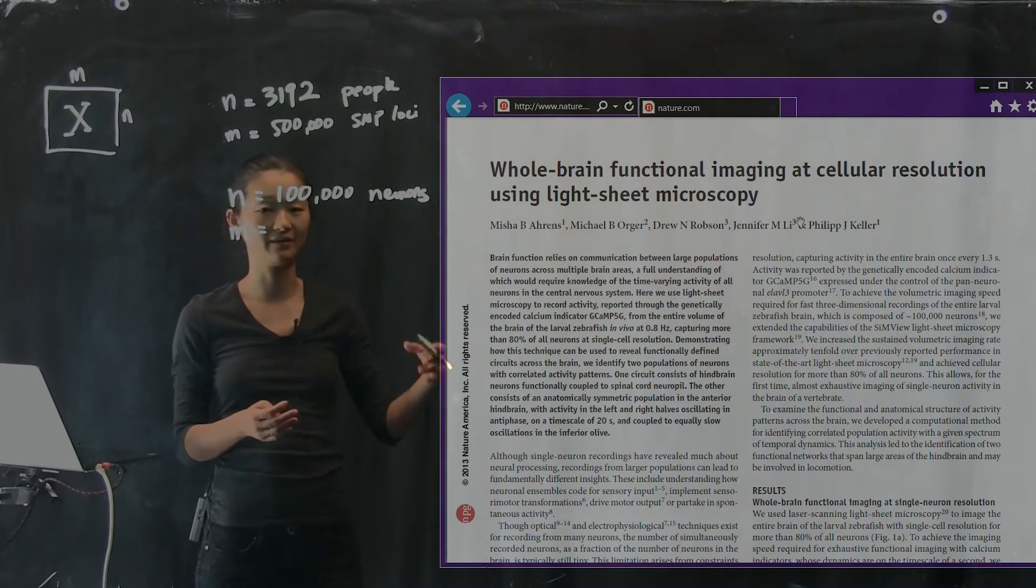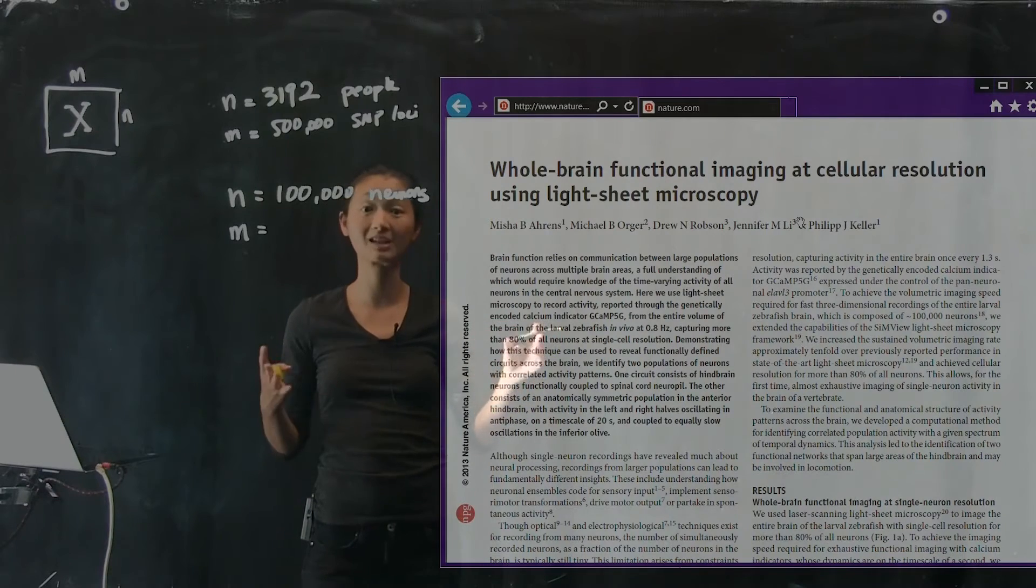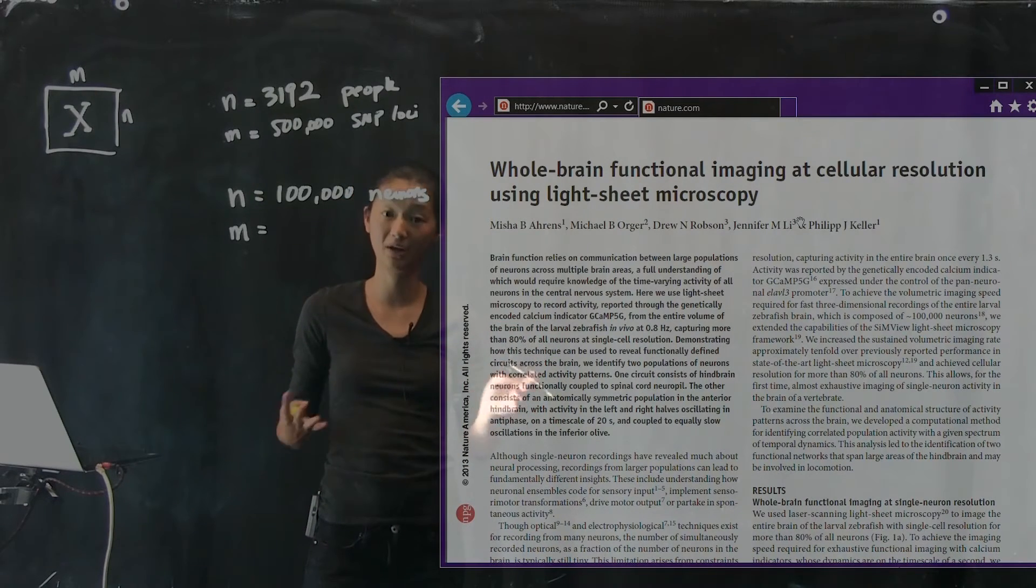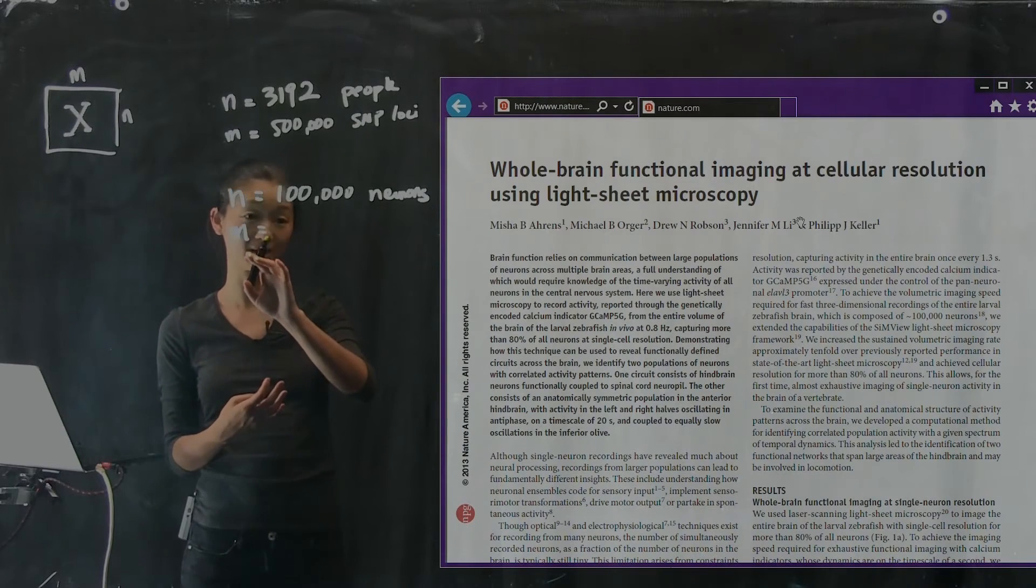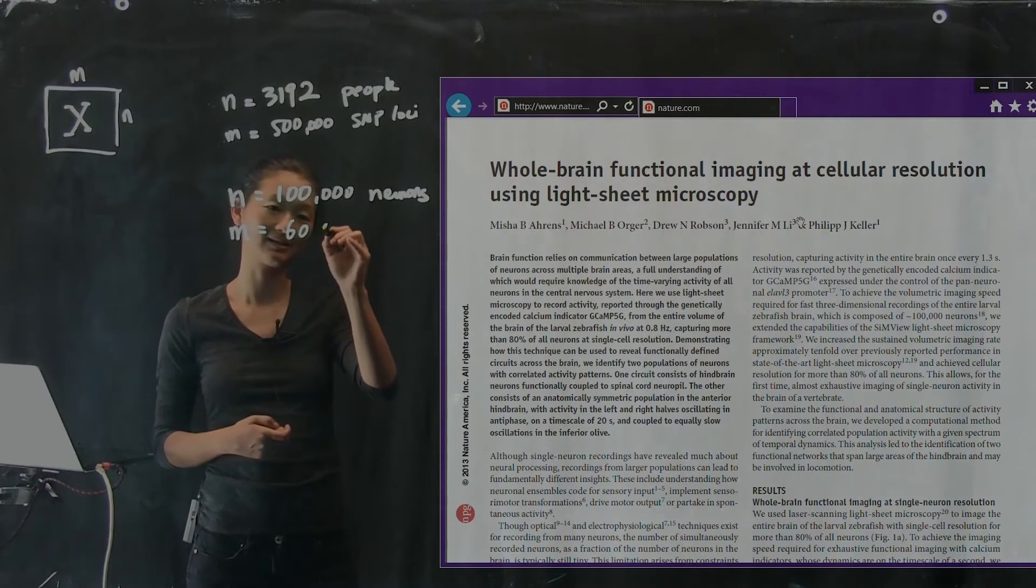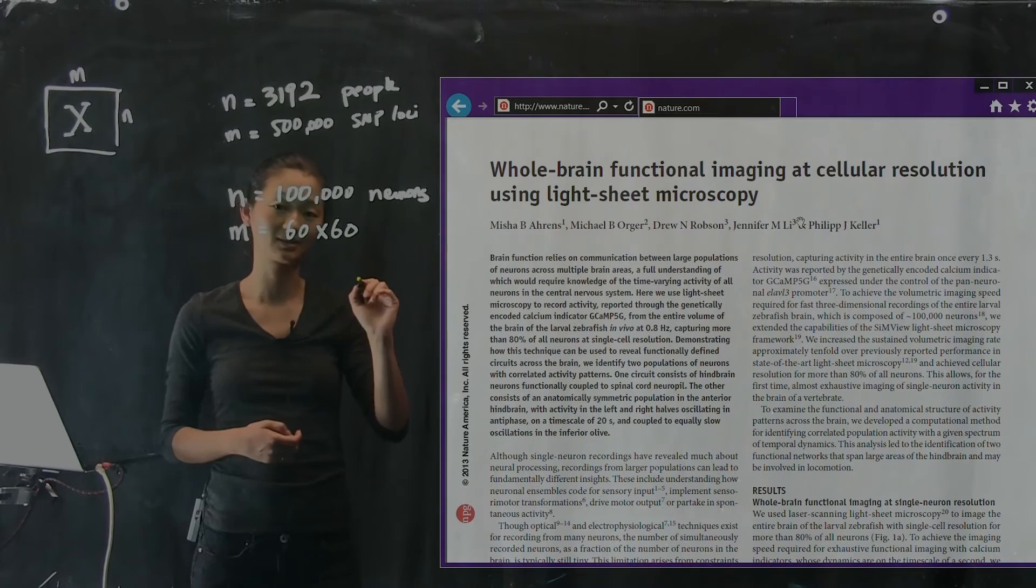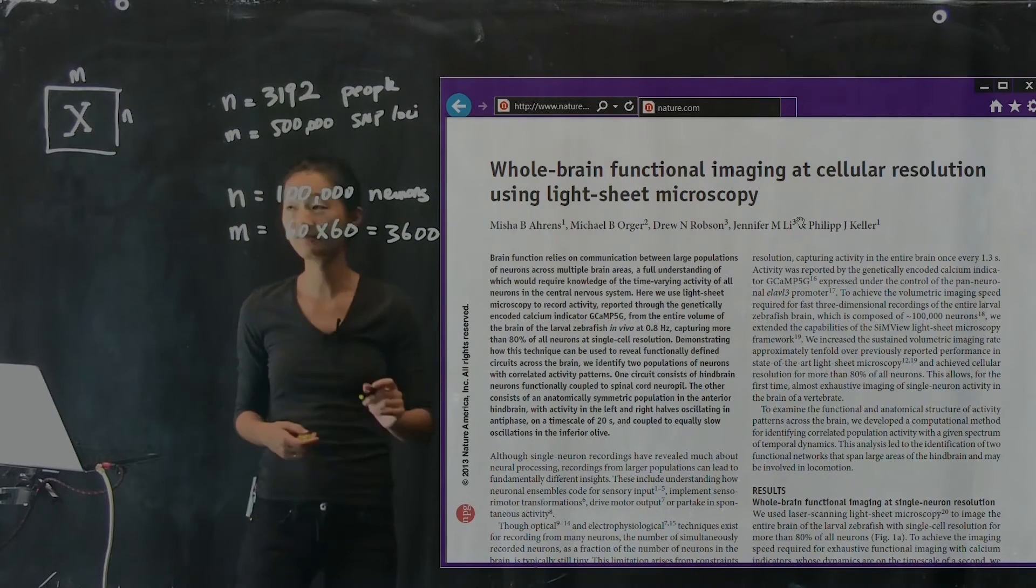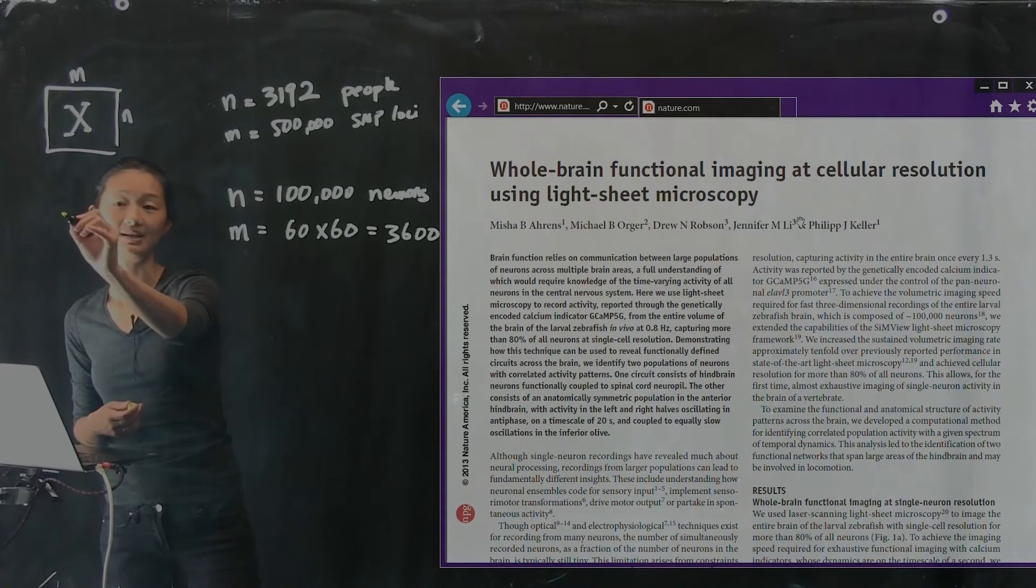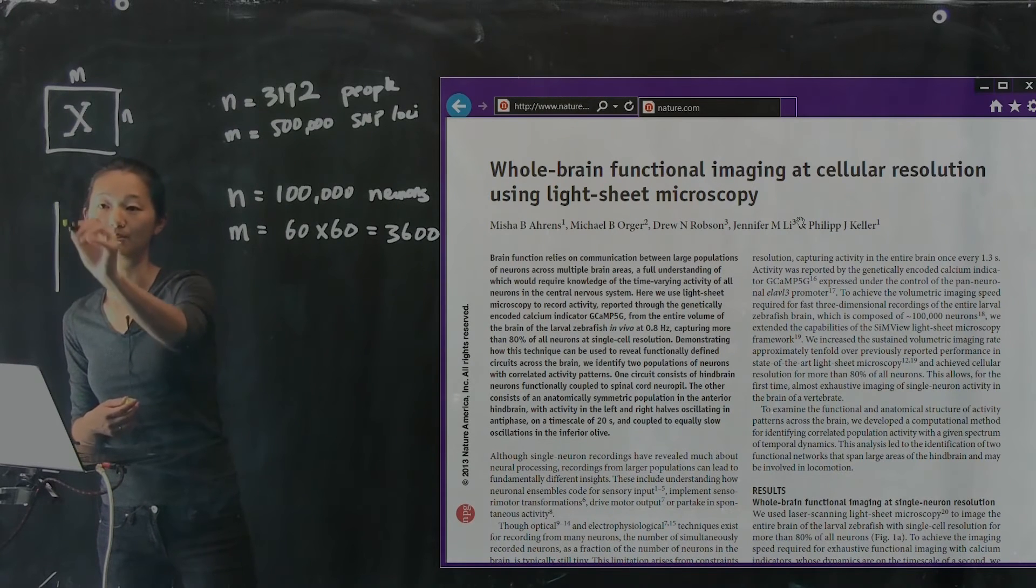And they can do this experiment for, let's say, an hour, right? So M now, instead of being a lot of measurements that are static at different locations, are a lot of measurements in time. So if the frequency of the capture is approximately once per second, and we have about an hour's worth of data, then M, the number of measurements that we have, is 60 seconds times 60 minutes.